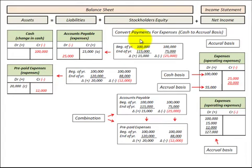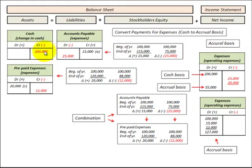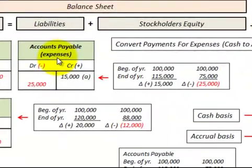To convert to our accrual basis, we need to determine the changes in our accounts payable and our prepaid expenses. Any debits or credits to accounts payable or prepaid expenses would be balanced with a debit or credit to our expense account on the income statement, and transactions that normally affected our cash account would instead be transferred to our expense account. The first thing we do is determine our changes in accounts payable and prepaid expenses.